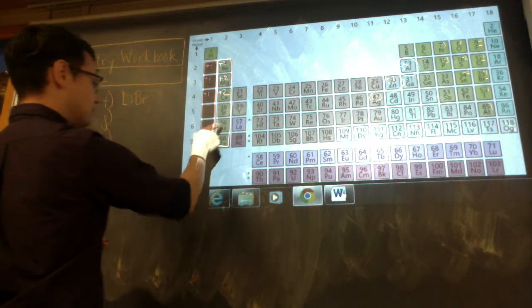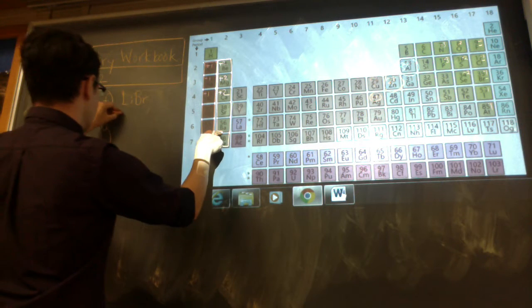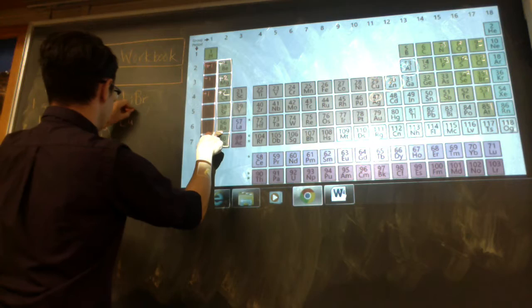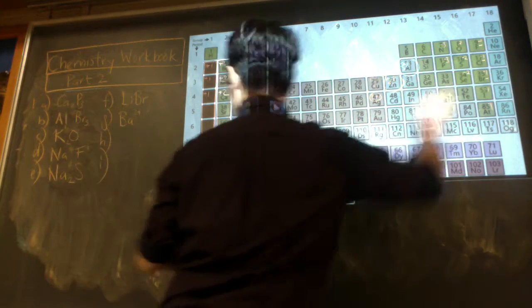Barium iodide. Barium, column 2, so that's going to be a 2 plus. Iodide, 1 minus.